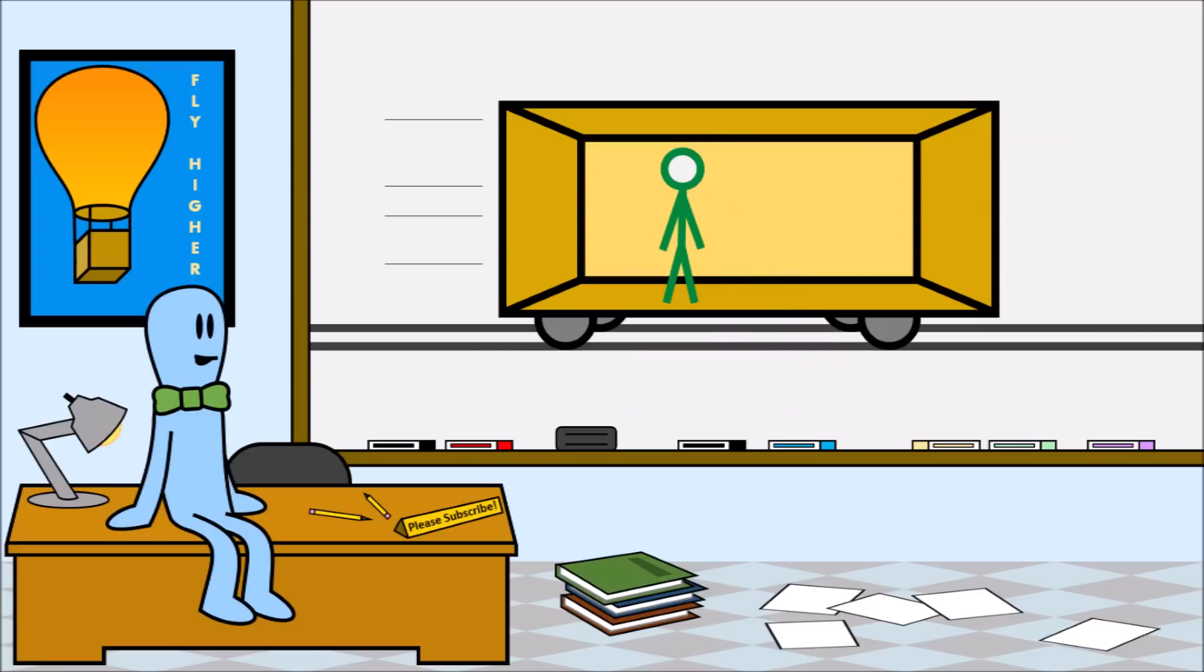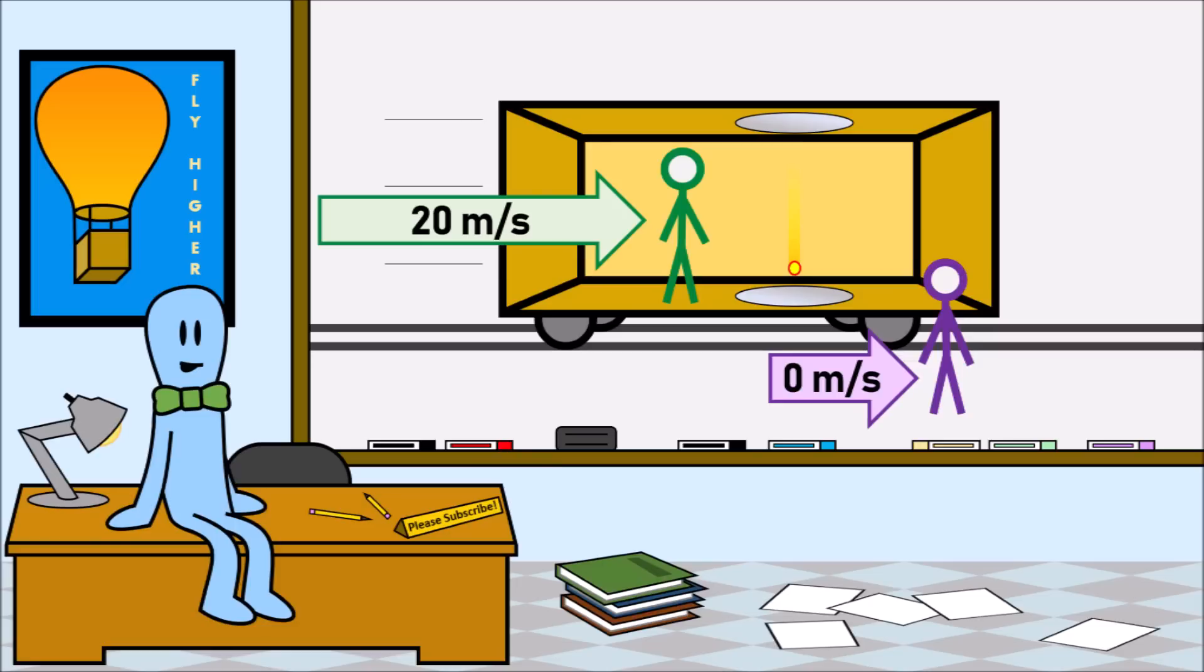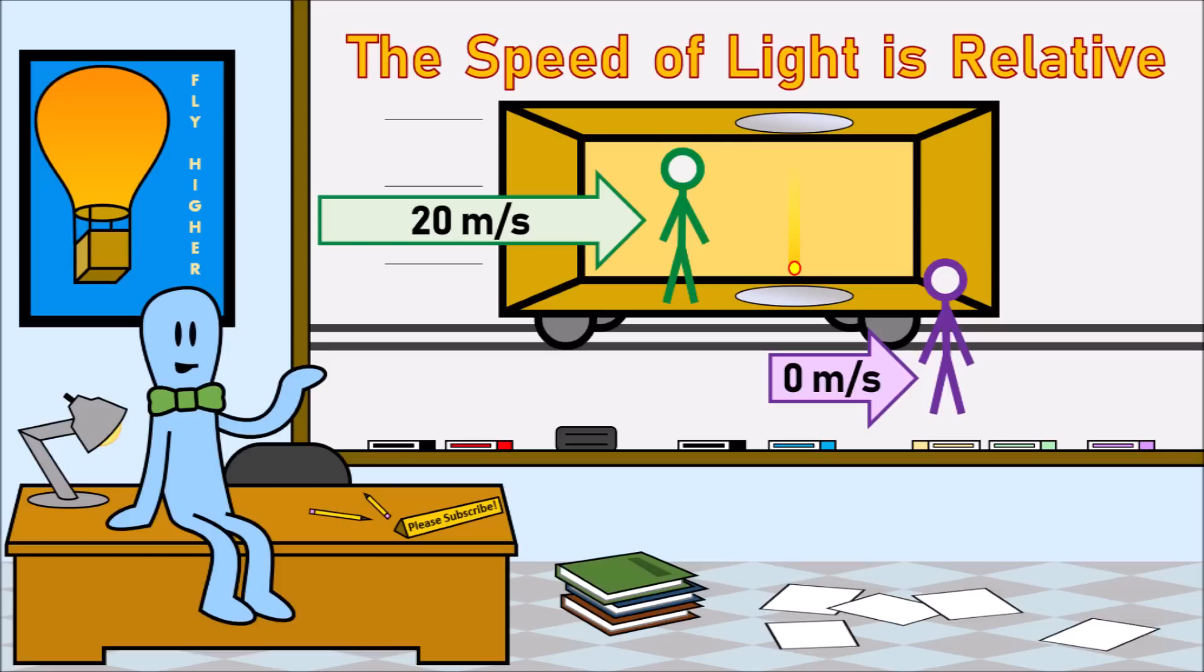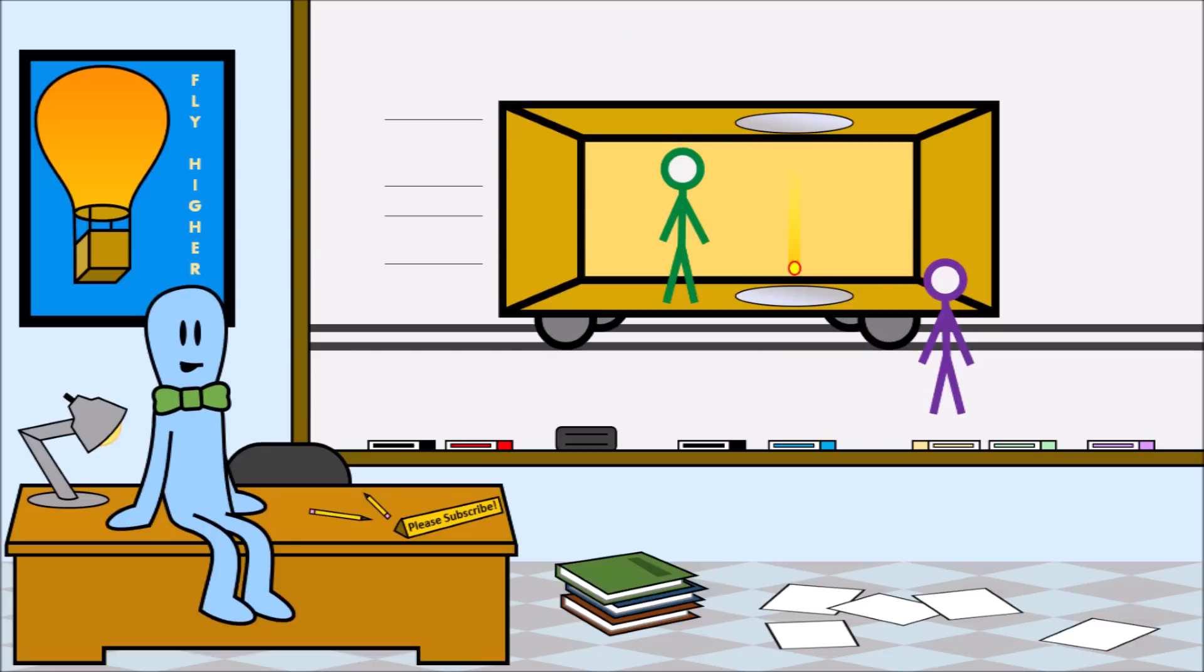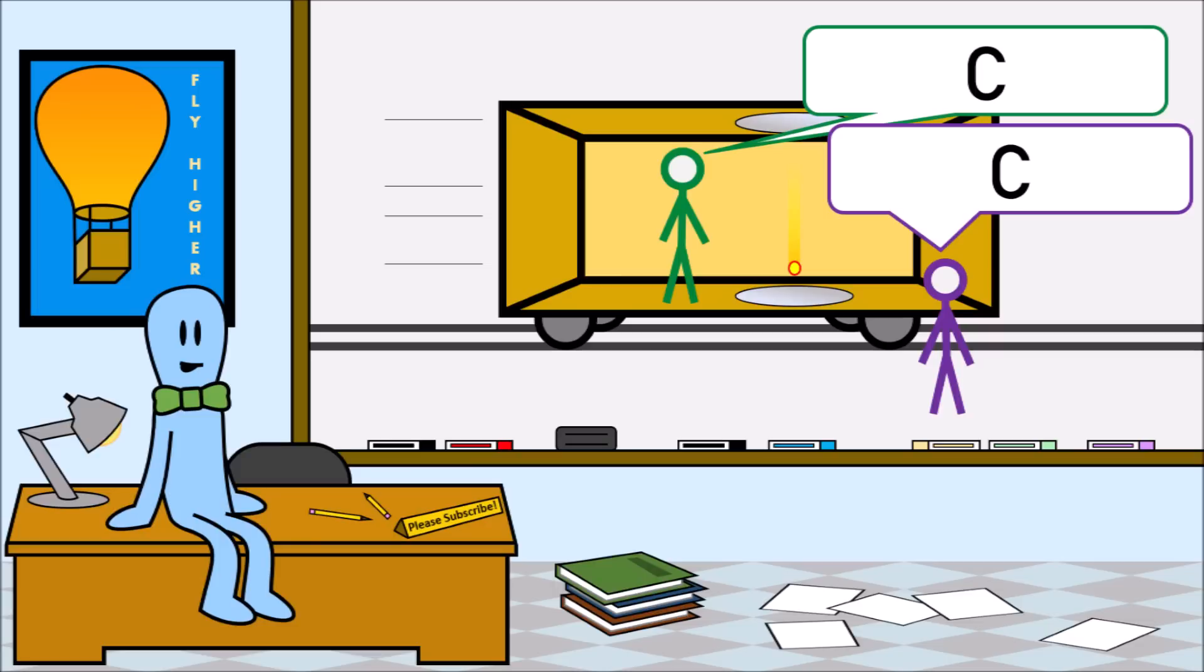Now instead of a ball, let's say the scientist on the train has two mirrors and is bouncing a photon or a light particle up and down between these two mirrors. The on-train scientist observes the photon traveling at a constant 299,792,458 meters per second. And here's the weird thing. The off-train scientist also observes the photon moving at a constant 299,792,458 meters per second. Based on our ball experiment, we would expect the on-train scientist to see the photon moving slower than the off-train scientist because they're observing the photon from different relative velocities. But the speed of light is special because it's relative. Each scientist is observing the same photon traveling at the same speed relative to themselves. 299,792,458 meters per second. Which I'm going to call C from now on for simplicity and sanity. So no matter how fast or slow the train is moving, both scientists will always observe the photon moving at C.